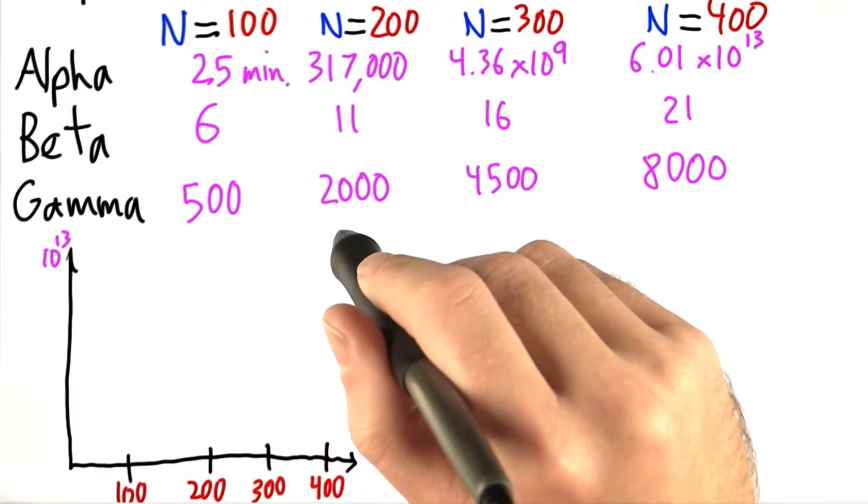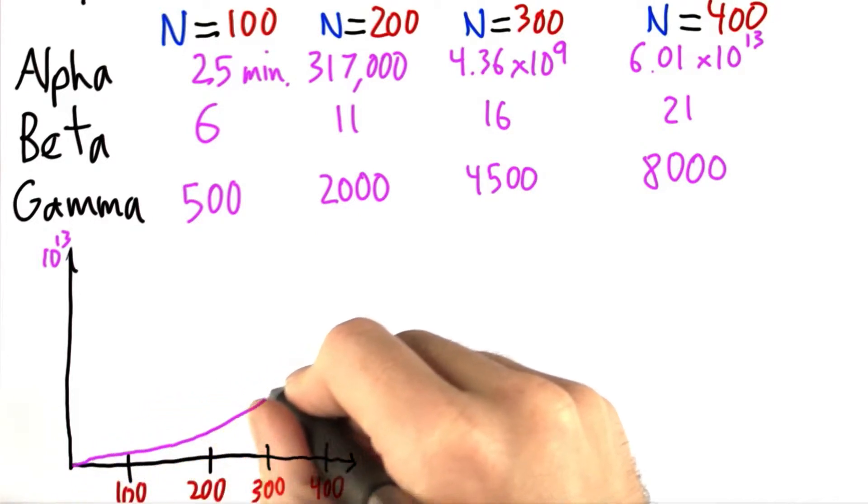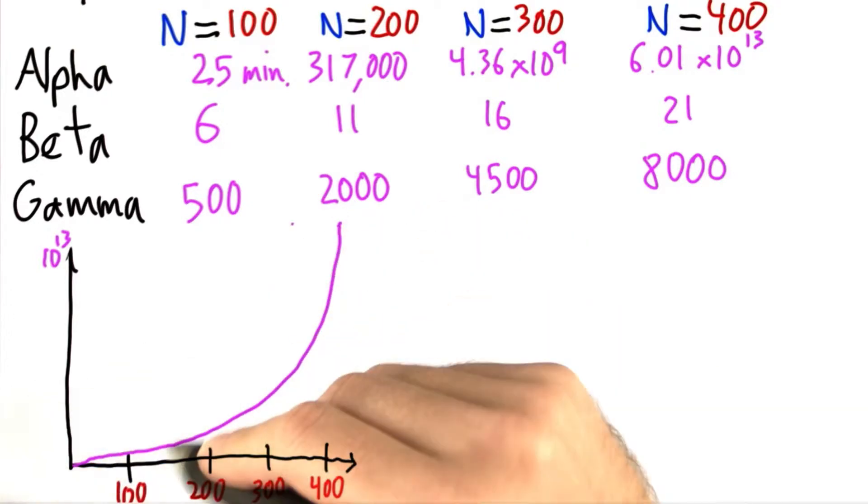And then it's way up here for N equals 400. Let's just draw an approximation to that. And this is not to scale, but it will give you an idea for the shape of the graph, which is really what we're going for.